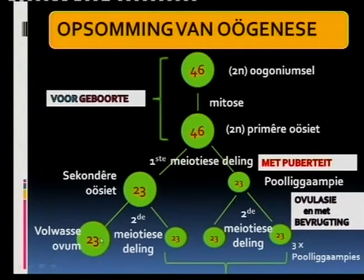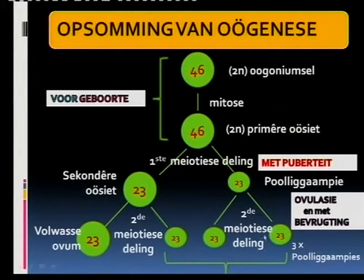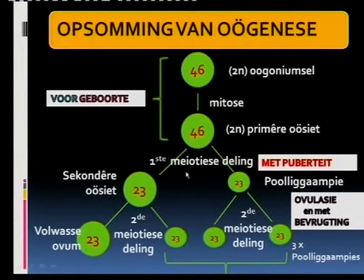The secondary oocyte undergoes the second meiotic division, producing one mature ovum and one polar body. The three polar bodies form a protective layer around the egg cell until fertilization takes place. 'Eiersal' is an accepted Afrikaans scientific term — you can use either 'eiersal' or 'ovum'; both are correct.